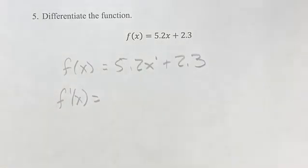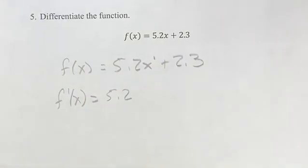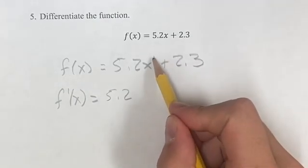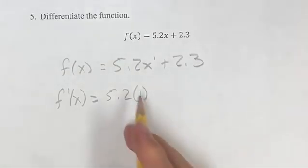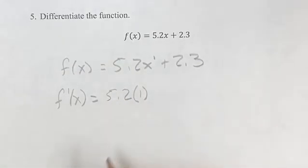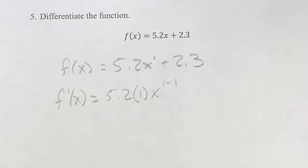The derivative is, you take the coefficient, get that out of the way first, and then you bring the exponent down, bring that as a coefficient, so I'm multiplying that by 5.2, and then you subtract 1 from the coefficient.